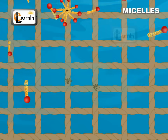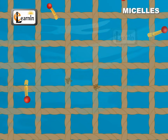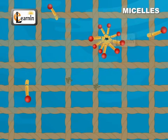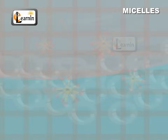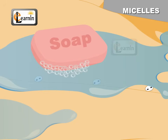Thus, the dirt held along with the micelles is also easily rinsed away. The soap solution appears cloudy since the micelles are large enough to scatter light.